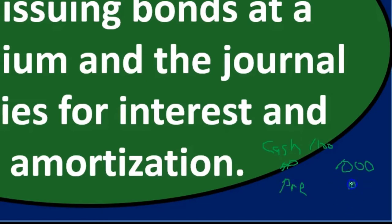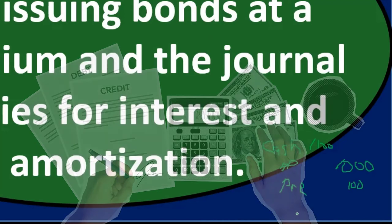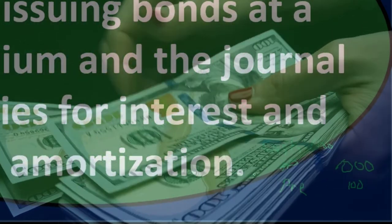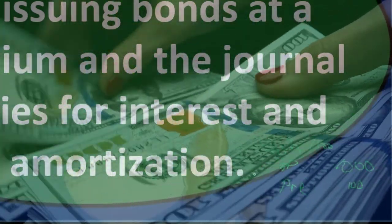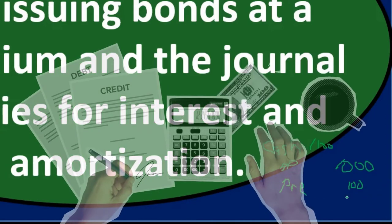It's useful to make up numbers and write down the journal entry — even for essay questions. When we issue the bond, we debit cash, put the bond on the books for its face amount, and if it's issued at a premium — meaning we received more cash than the face amount — we then have to credit the premium. Whether it's a debit or credit can be confusing.